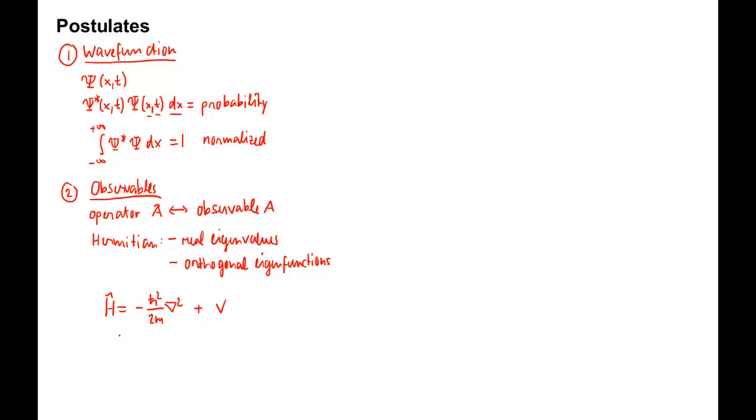Generally, different operators may or may not commute. If they commute, so if the commutator of two operators equals zero, then we know that they share a common set of eigenfunctions.